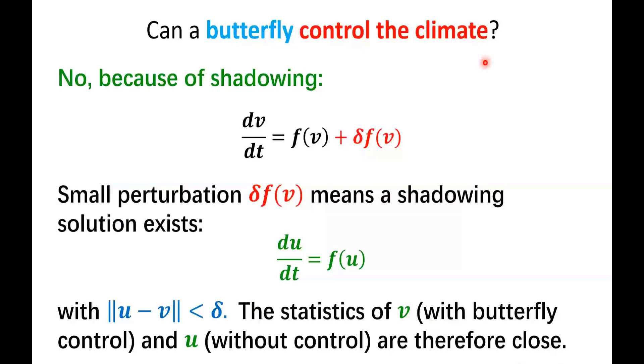So what's the consequence of shadowing? The consequence is that you can argue from shadowing that a butterfly cannot control the climate, because if you have a solution v that satisfies the controlled governing equation, where the control delta f is very small, we're talking about a butterfly here, then a shadowing solution would exist that satisfies the unperturbed governing equation. And the difference between the perturbed solution that has the control and the unperturbed solution without the control would be very, very small indeed.